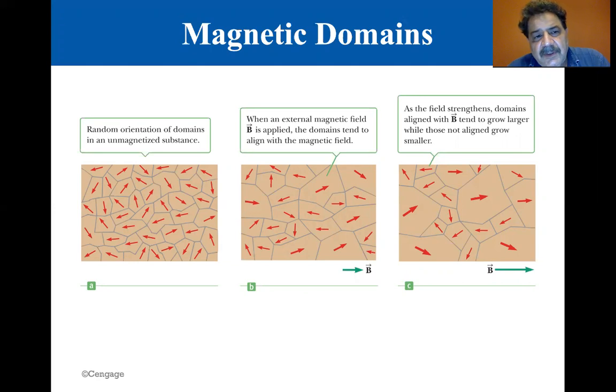You can see that random orientations of domains in an unmagnetized substance, they're just going everywhere. When an external magnetic field B is applied, the domains tend to align with the magnetic field. You can see that the domains are growing, and they're kind of all starting to point in the same direction.